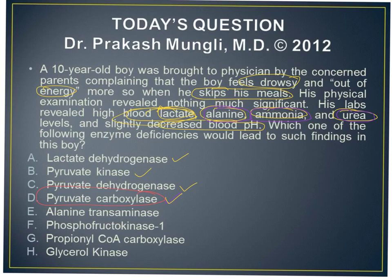Pyruvate carboxylase is a gluconeogenic enzyme that converts pyruvate into oxaloacetate. If this enzyme is deficient, pyruvate is elevated and can go towards lactate formation. Also, alanine is converted to pyruvate during gluconeogenesis, so deficiency of pyruvate carboxylase can lead to elevation of alanine levels — making it a strong candidate. Alanine transaminase deficiency would increase alanine but does not explain increased lactate or hypoglycemia, so it cannot be the answer.